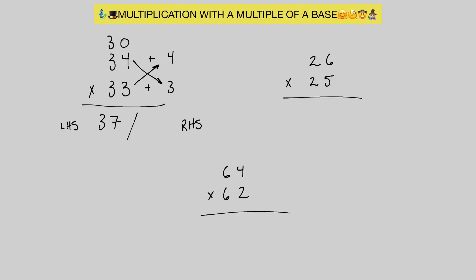For our right hand side, we multiply these deficiencies together. Remember, however many zeros are in the base we're working with, that's how many digits are allowed in the right hand side. In this case, we're only allowed one digit. So 4 times 3 gives us 12. We only have room for one digit, so we write it as a small 1 and a big 2. That's our number 12, because this 1 has to carry over.